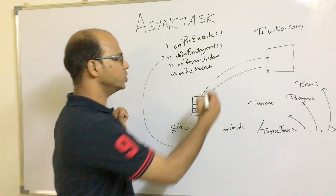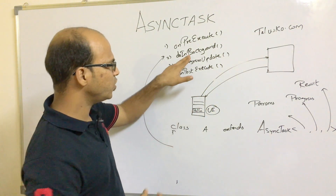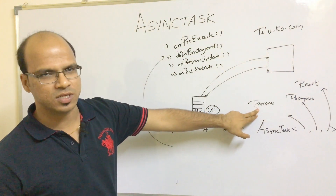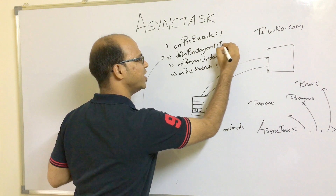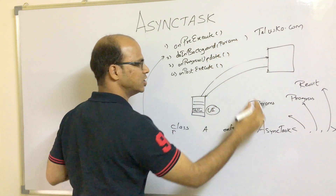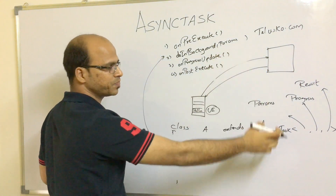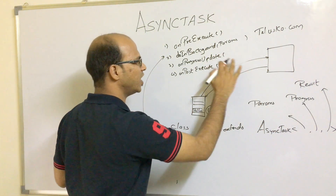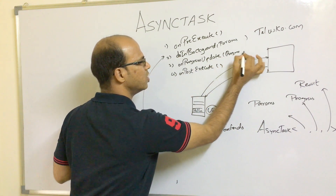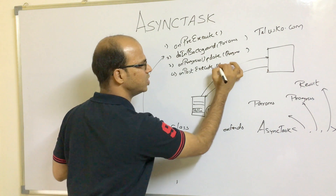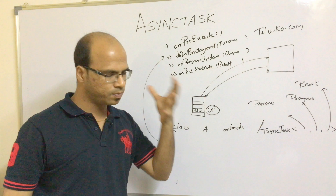Regarding parameter mapping: when you work with doInBackground, you pass the Params type there. The Progress type is used in onProgressUpdate. And the Result type is used in onPostExecute.